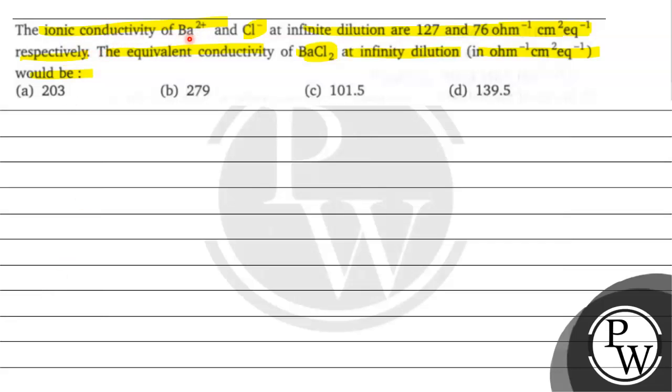How do we say ionic conductivity of Ba2+ and Cl-? This ionic conductivity is in the form of conductance, because we can find out from this unit.